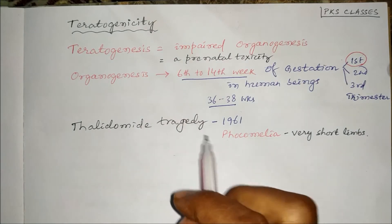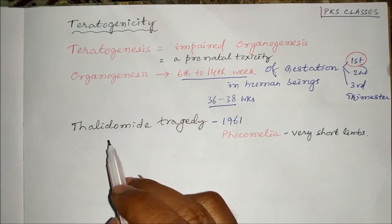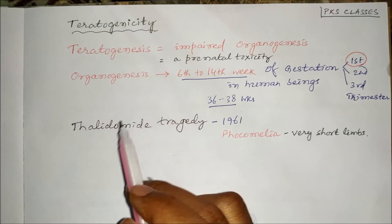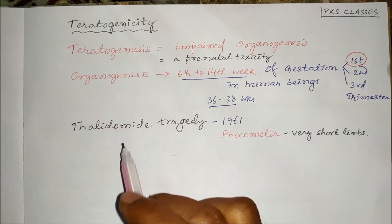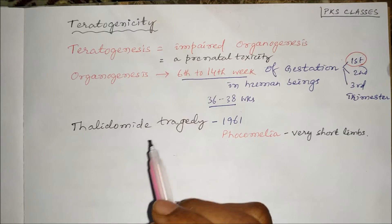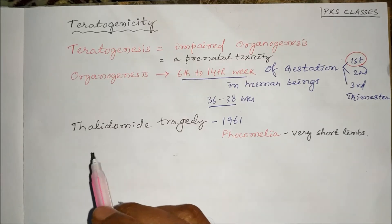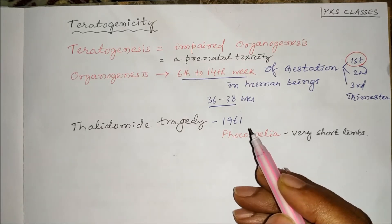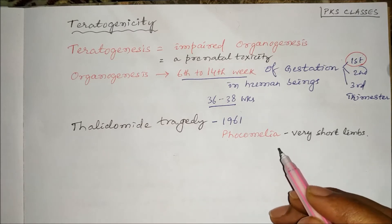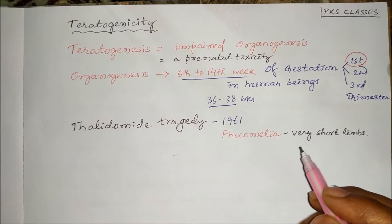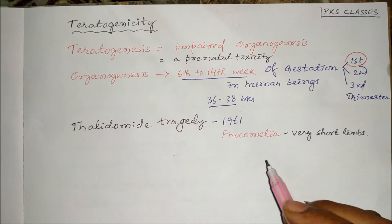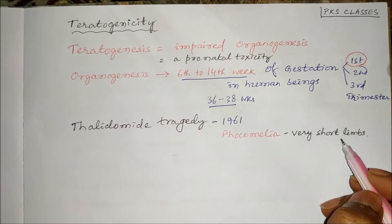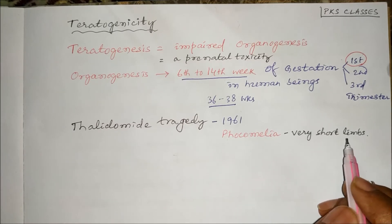Teratogenicity was first reported in 1961 with the drug thalidomide. At that time, thalidomide was prescribed to pregnant women. The babies born to those women were suffering from phocomelia — meaning they had very short limbs.